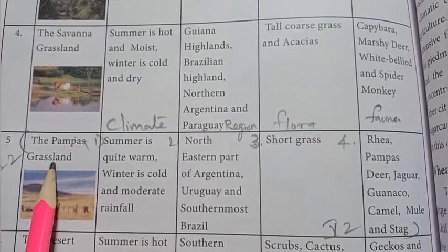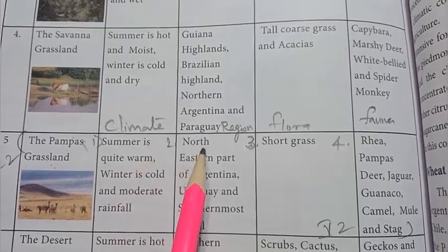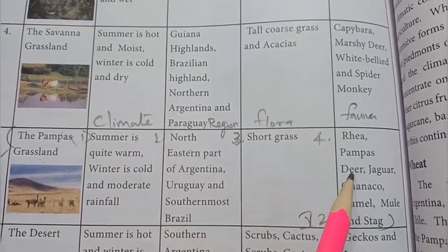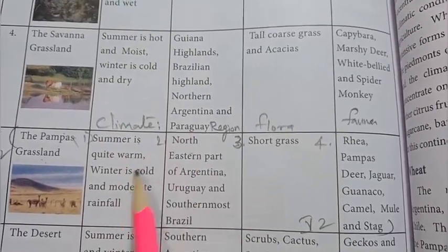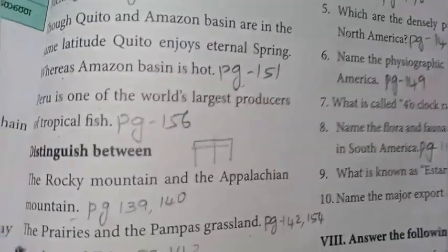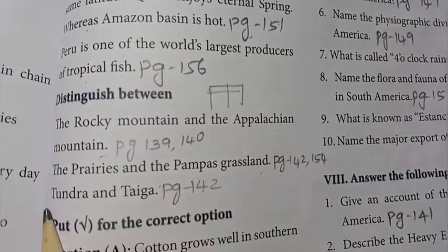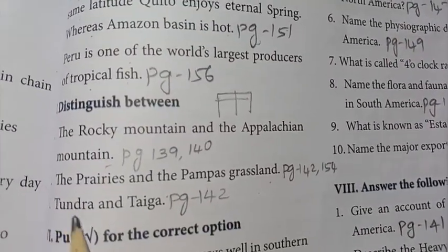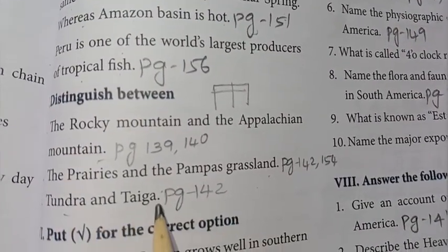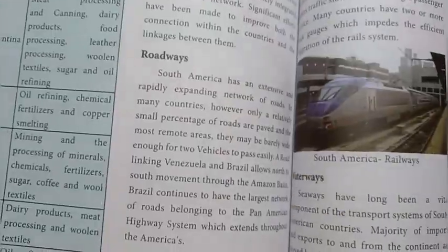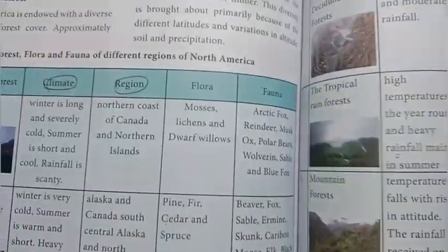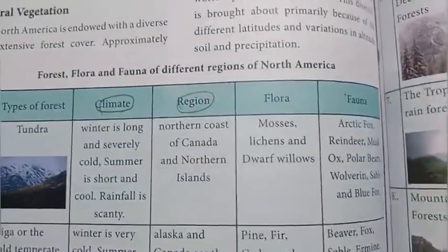For the Pampas Grassland, write the first, second, third, and fourth points including climate. This completes the distinction between Prairies and Pampas. Distinguish between, third one — Tundra and Taiga. Turn to page 142 for Tundra and Taiga.